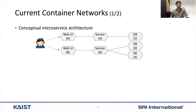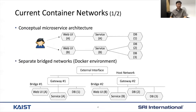Here I'd like to first show how a container network looks like. When we think about microservices, we can draw them as shown in the upper figure. However, in reality, the containers for microservices are connected to each other, like the lower figure. Especially in Docker environments, there are multiple bridges for each microservice, and containers are linked to the bridges for their microservices.